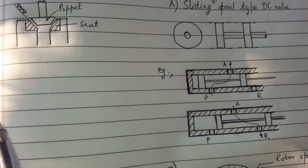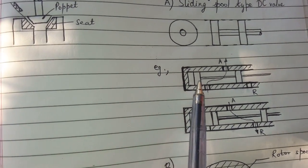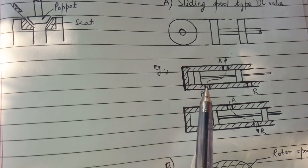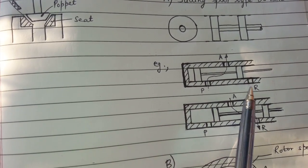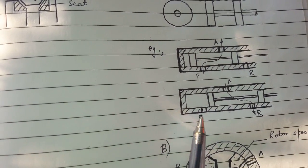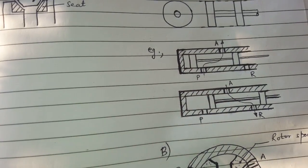Here I have given one example. The movement of the sliding spool is opening port P and closing port R and when it moves to other direction it closes port P and opens port R.